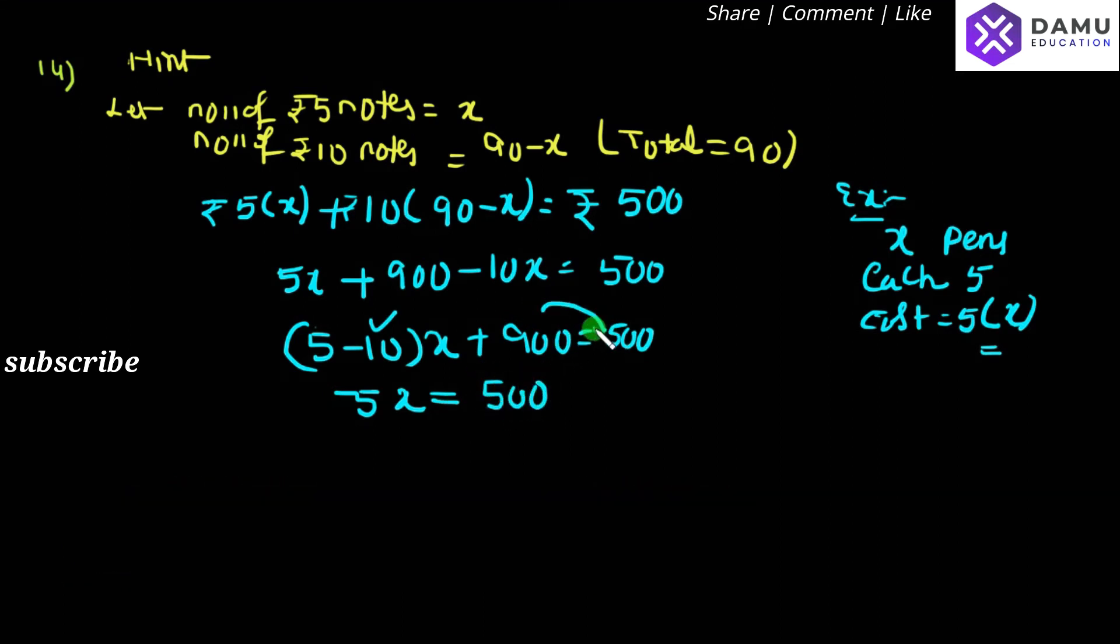This 900, if you take it to the other side, the plus here will become minus 900. Then 500 minus 900, without considering sign that's 400. 900 is bigger, and before that minus is there, so put minus. We get minus 5x.